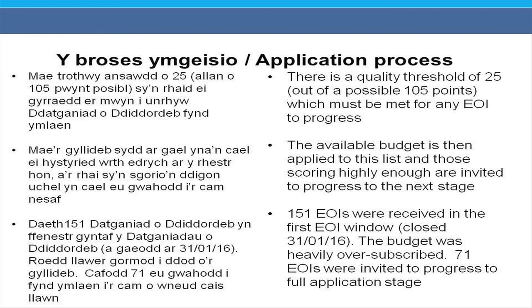In the first expression of interest round, which closed on the 31st of January 2016, the Welsh Government received 151 expressions of interest. The budget was heavily oversubscribed, and 71 expressions of interest were invited to progress to the full application stage.